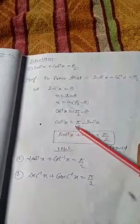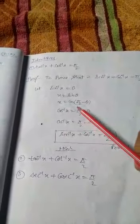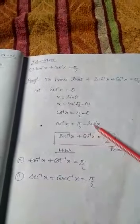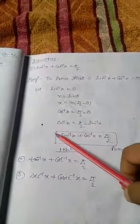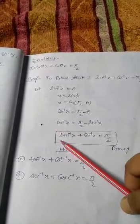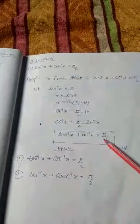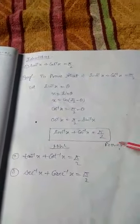Cos inverse x is equal to π/2 minus θ. θ's value is sine inverse x. On taking left side sine inverse x, we get sine inverse x plus cos inverse x is equal to π/2. Hence proved.